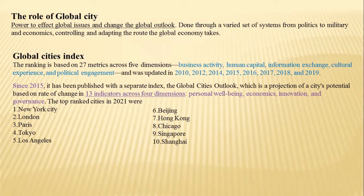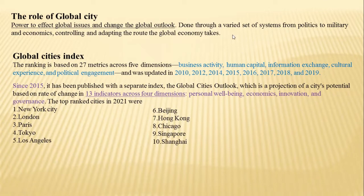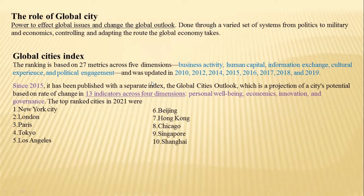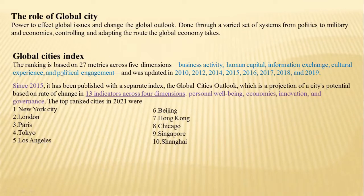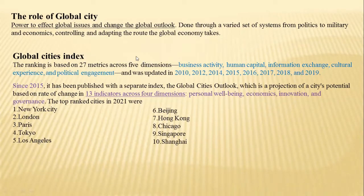How do we rank global cities? The ranking is done using several matrices or metrics across five dimensions: business activity, human capital, information exchange, cultural experience, and political engagement. A total of 27 parameters or metrics are chosen, and based upon those, the global cities index was created. However, since 2015, the 27 metrics have been cut short, the five dimensions reduced to four dimensions, and now only 13 indicators are used.